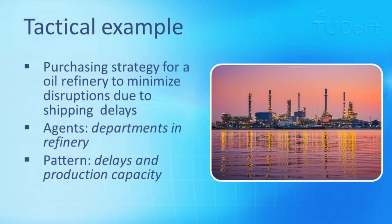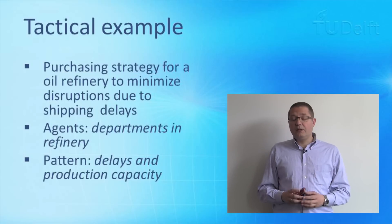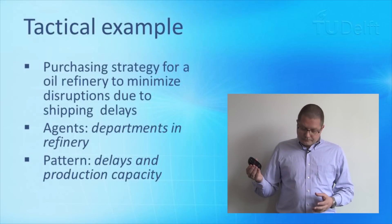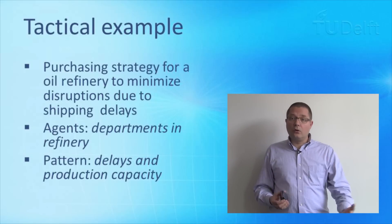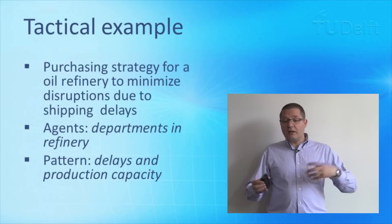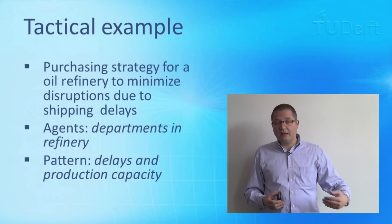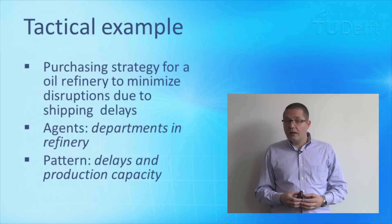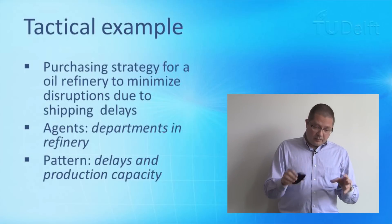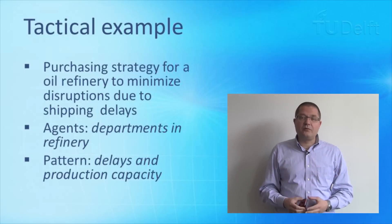At a medium, tactical time scale, there is an example of a refinery — work done by a colleague, Dr. Van Dam, who looked at the purchasing strategy and its effects on the performance of a refinery facing delays and disruptions in its crude oil supply. In this case, the agents are multiple departments, each with their own internal logic and goals, trying to cooperate and make money while experiencing delays from weather disrupting ships. The overall emergent pattern is the performance, efficiency, and profitability of the entire plant.